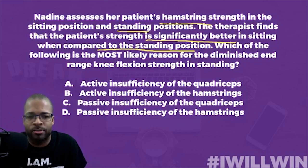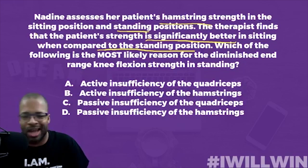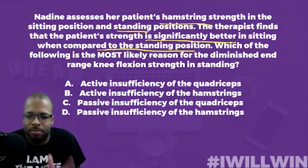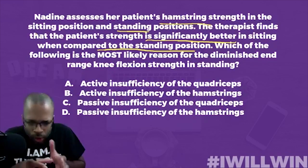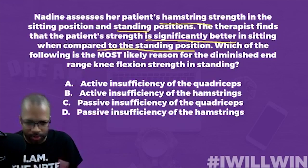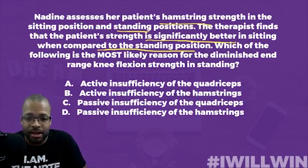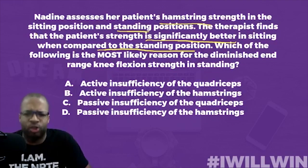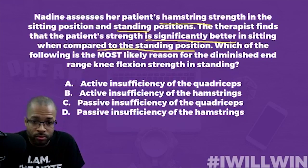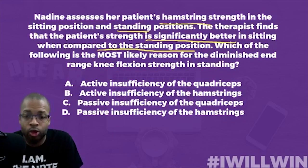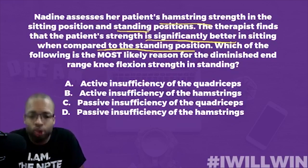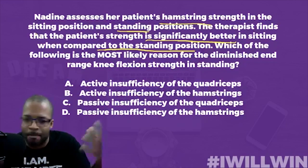Before dissecting the answer choices, we need to go through what active insufficiency and passive insufficiency mean. Active insufficiency is the inability of a two-joint muscle — like the quads or hamstrings, which span the hip and the knee — to generate force because the muscle has become too short. Write that down: the inability of a two-joint muscle to generate force because the muscle has become too short.